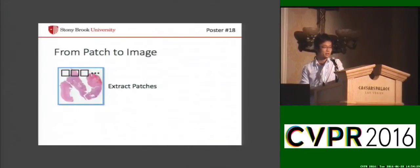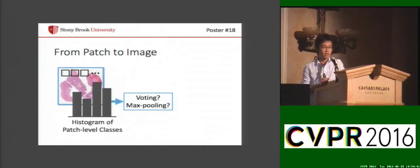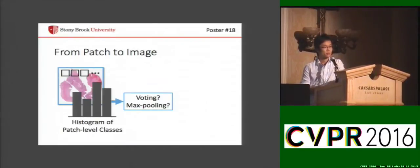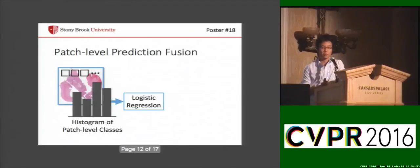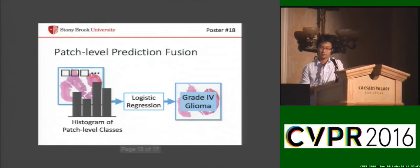During test time, you extract patches, run the patch CNN, and score these patches. How can you predict the label of the image? Voting or max pooling assumes that one patch-level class corresponds to one image-level class. But in many cases, multiple patch-level classes are correlated with one image-level class. To model this, we propose a supervised model such as logistic regression or SVM that takes the histogram of patch-level classes to predict the image-level class.